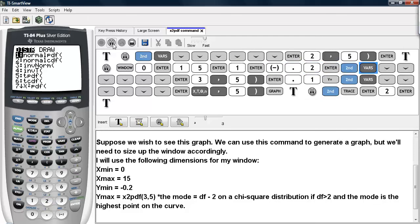Again we go under 2nd and VARS, go to the chi-square PDF command, and type in 3 for the value and then the degrees of freedom for 5. And then we have the y-scaling, I'll choose 1 tenth.